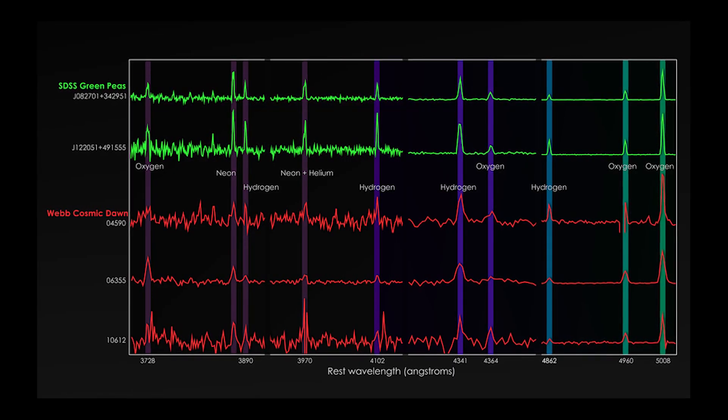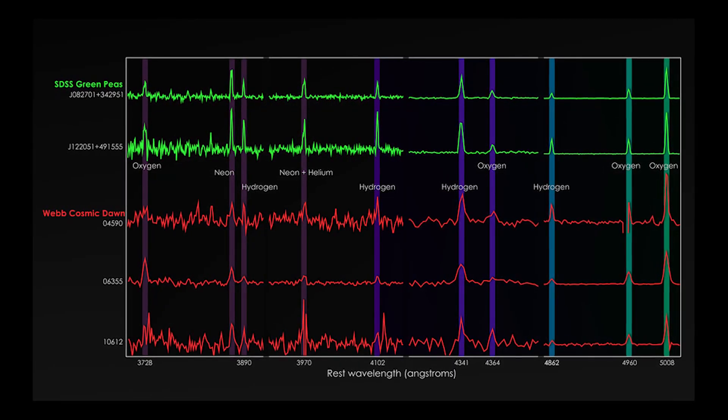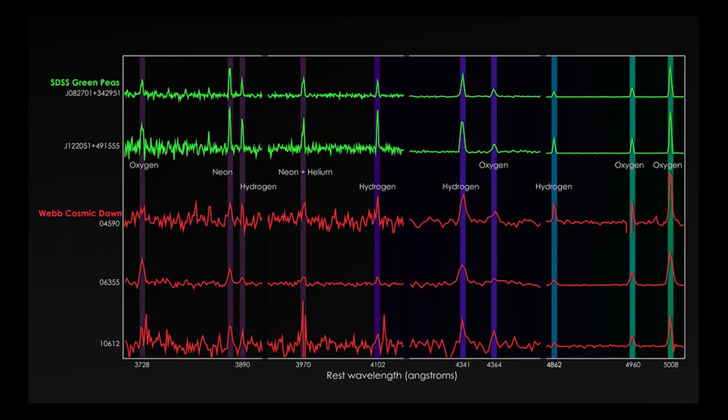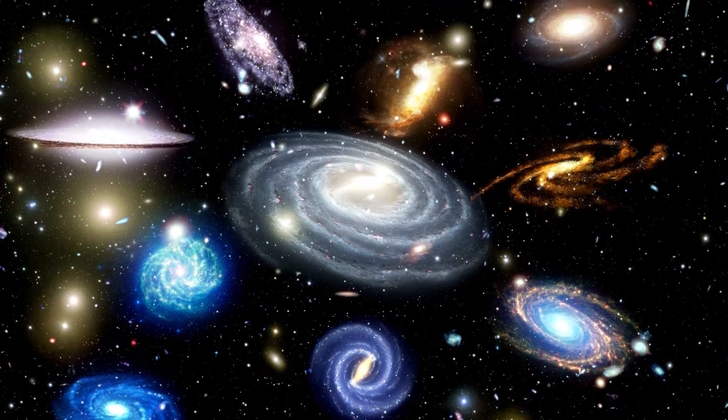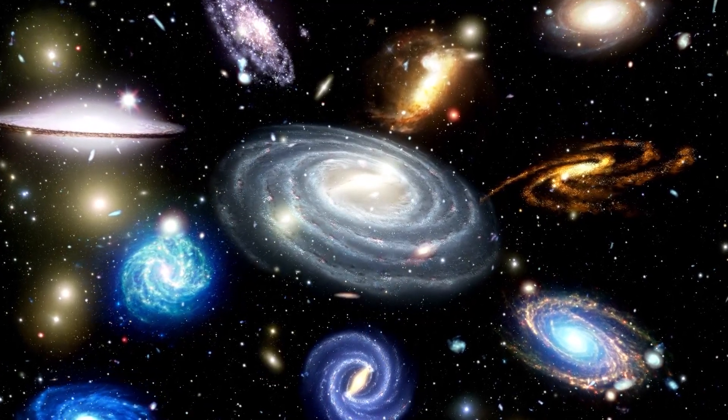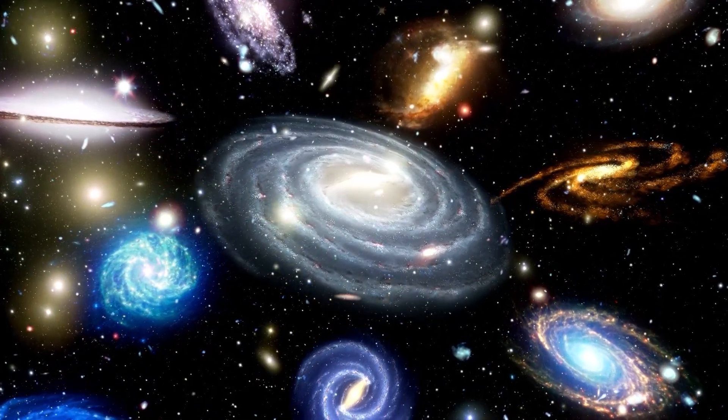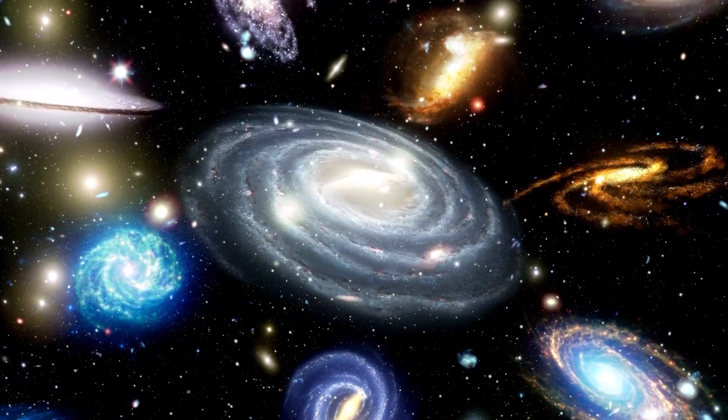With the detailed chemical fingerprints of these early galaxies, we see that they include what might be the most primitive galaxy identified so far. At the same time, we can connect these galaxies from the dawn of the universe to similar ones nearby, which we can study in much greater detail.